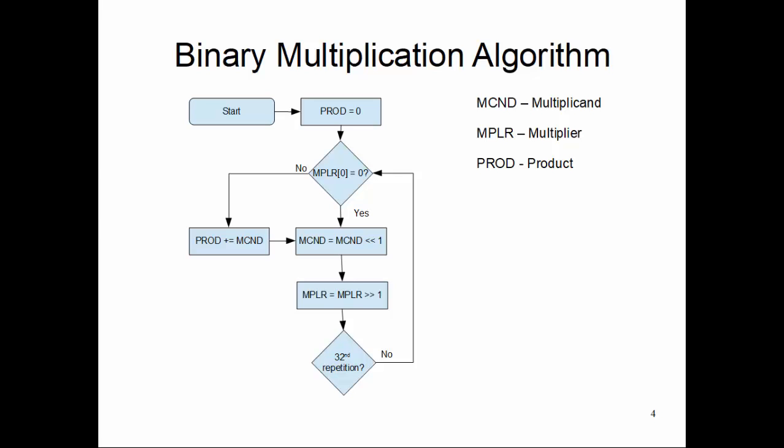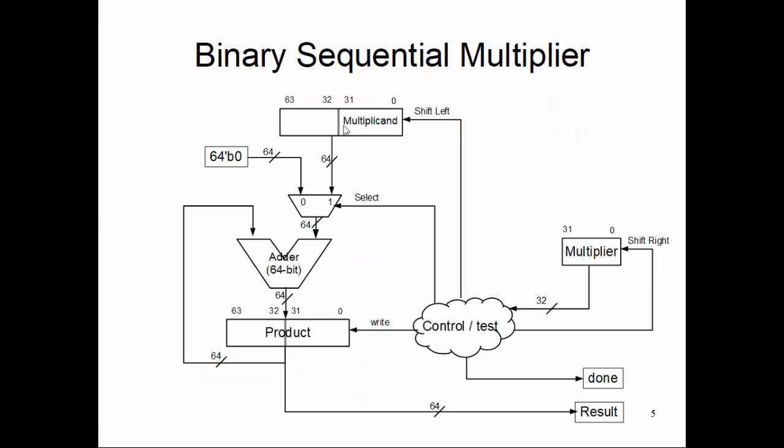The multiplier is stored in a 32-bit register, so we're talking about a 32-bit machine here. The multiplier is stored in a 32-bit register with right shift capability. We need to deploy one 64-bit register with left shift capability.